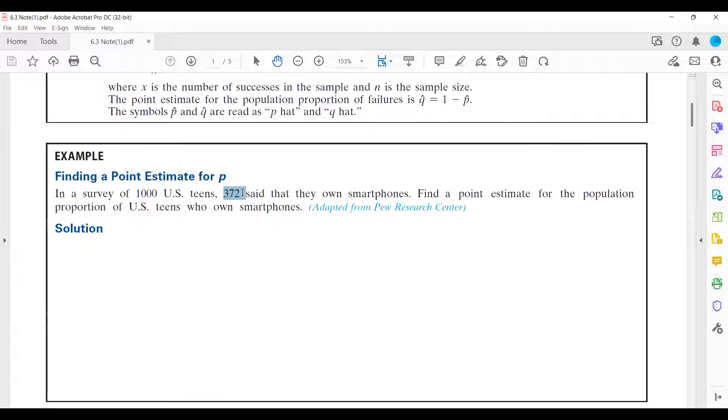Well, if I ask you to find a confidence interval for population proportion, what is the percentage of U.S. teenagers who own smartphones? What are you going to do? What are the steps that you're going to take? What would be the very first step that you're going to take?